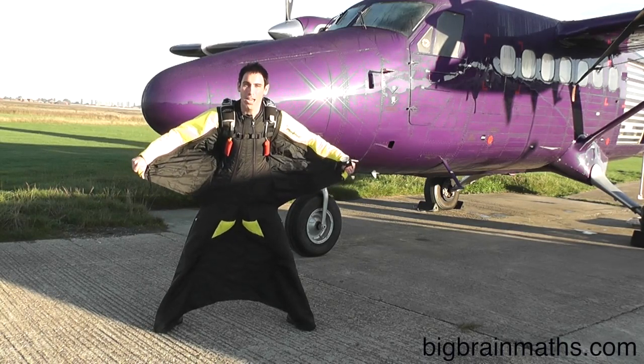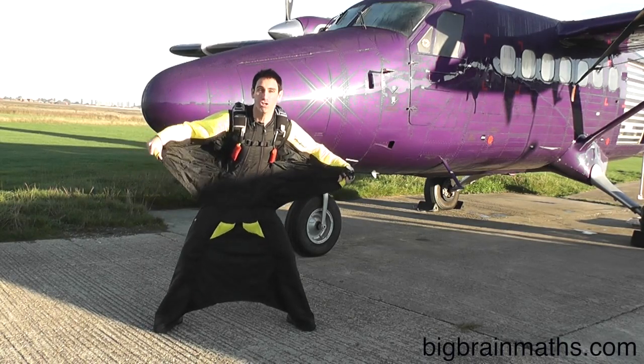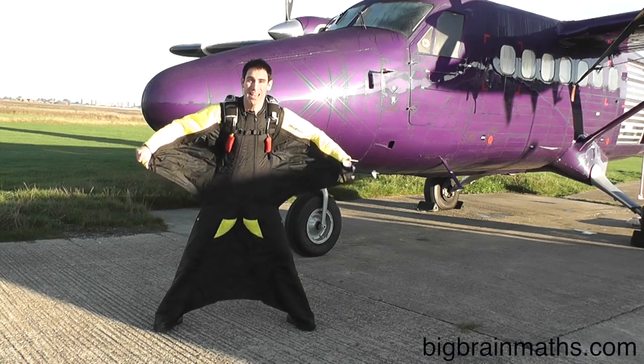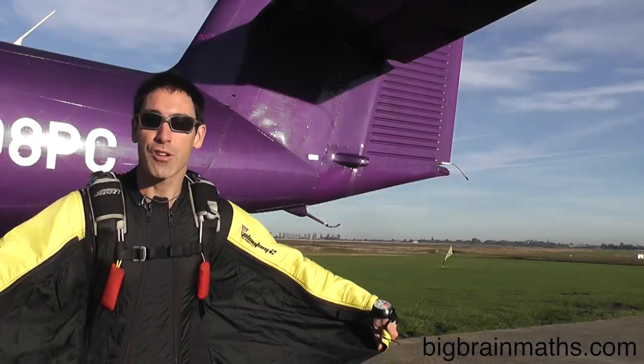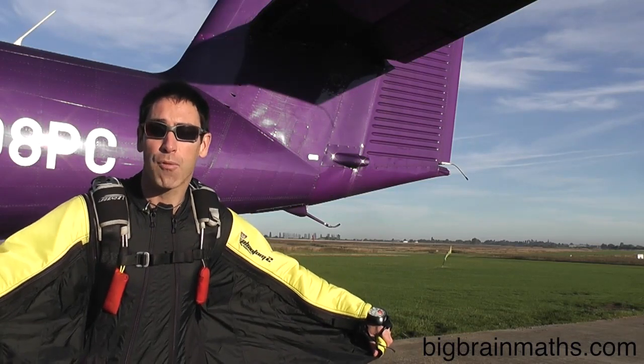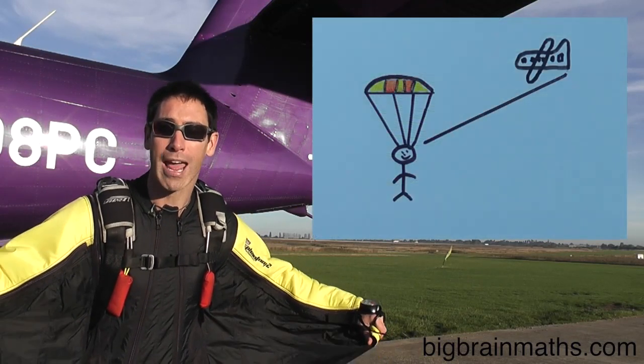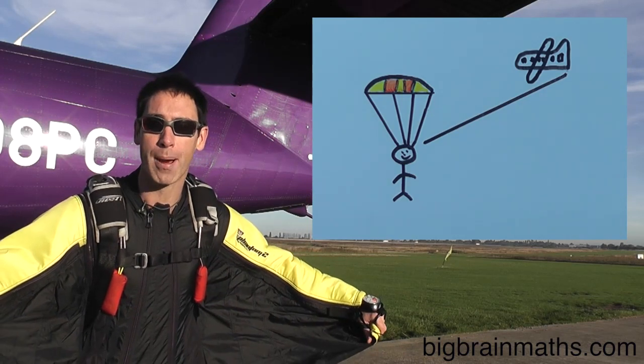This is a wingsuit. Now when I jump out of this plane, instead of falling straight down like a normal skydiver, this suit allows me to fly forwards whilst falling. If you track my flight across the sky, it forms a diagonal line from the point where I exit the plane to the point where I pull my parachute.